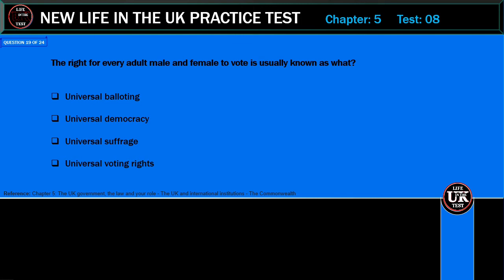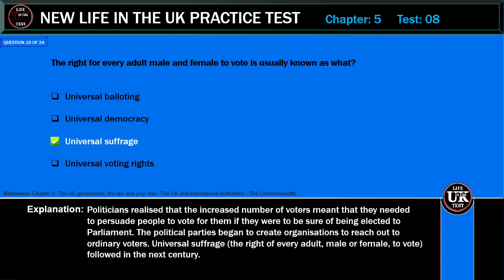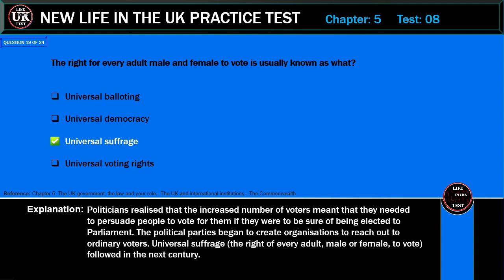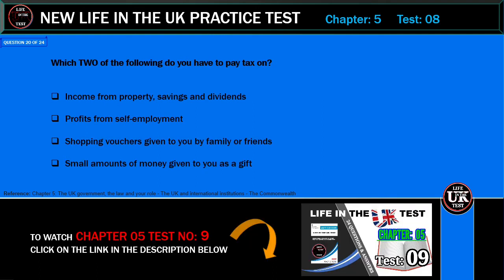The right for every adult male and female to vote is usually known as what? Universal balloting, universal democracy, universal suffrage, or universal voting rights? Correct answer: universal suffrage. Explanation: Politicians realized that the increased number of voters meant that they needed to persuade people to vote for them. The political parties began to create organizations to reach out to ordinary voters. Universal suffrage — the right of every adult male or female to vote — followed in the next century.